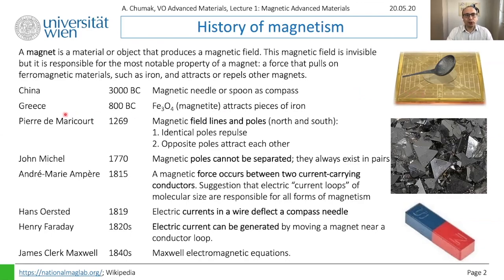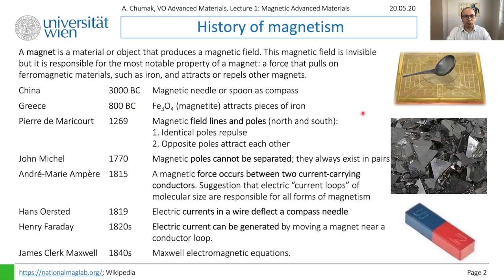Switching to Greece around 800 BC, we encounter iron oxide Fe₃O₄, named magnetite. People noticed these strange stones attracted each other, and magnetite actually gave its name to magnetism. There is ongoing discussion among colleagues about whether the words 'magic' and 'magnetism' are coupled and which came first.